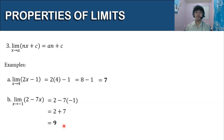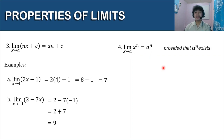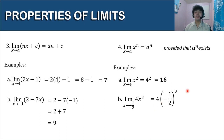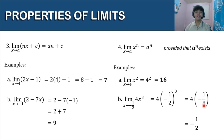For our fourth property: the limit of x raised to n as x approaches a is equal to a raised to n, provided that a raised to n exists. Example 1: the limit of x squared as x approaches 4 — substitute to get 4 squared, which is 16. For letter b, the limit of 4x cubed as x approaches negative 1 — substitute to get 4 times negative 1 raised to 3, which simplifies to 4 times negative 1, giving us negative 4.